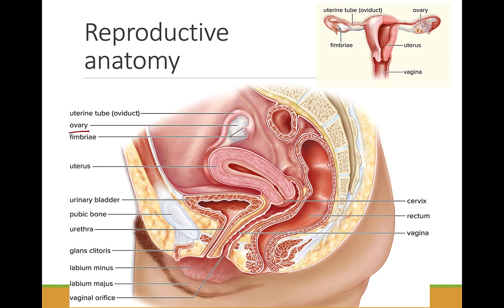These are paired structures found in the pelvic cavity. The ovaries usually alternate, generating an oocyte each menstrual cycle.